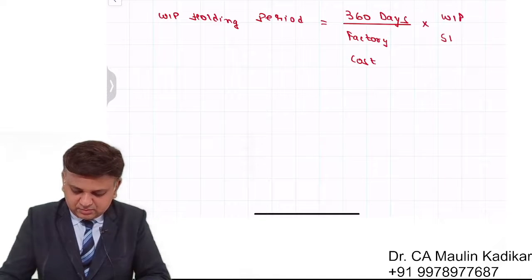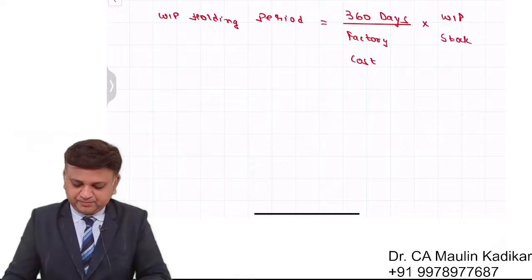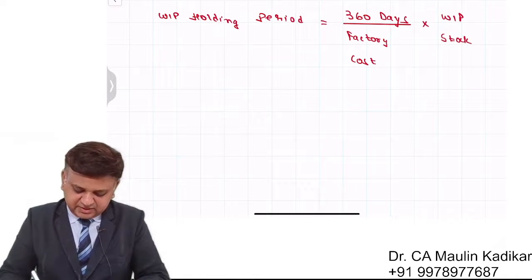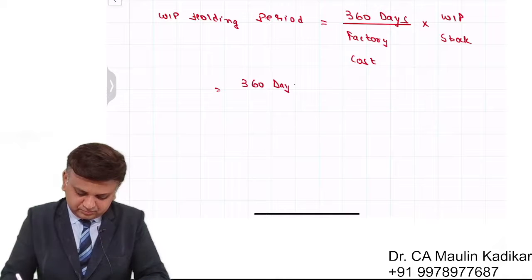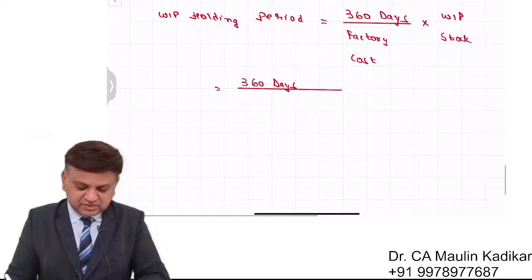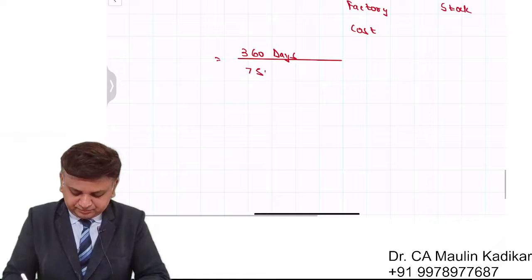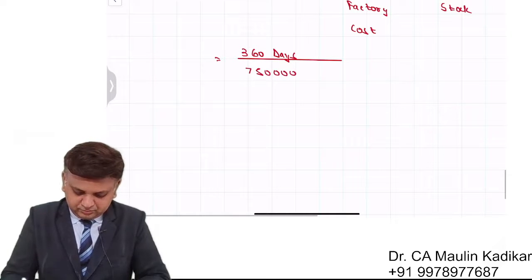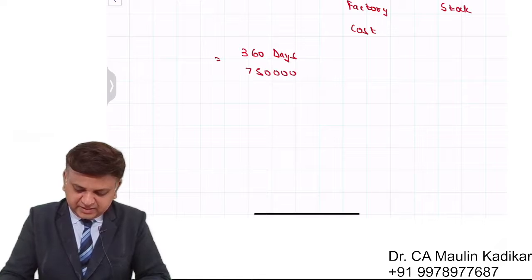Here we understand that it is 360 days divided by factory cost of $750,000, multiplying with $150,000.